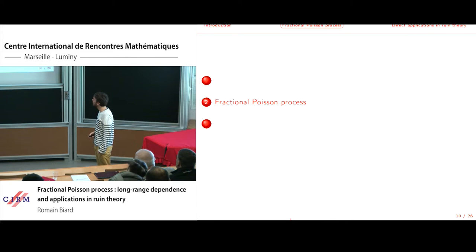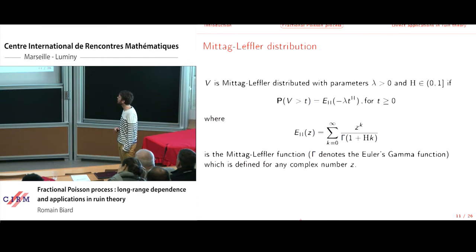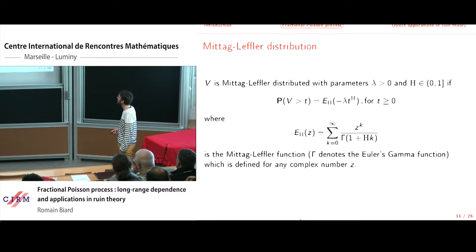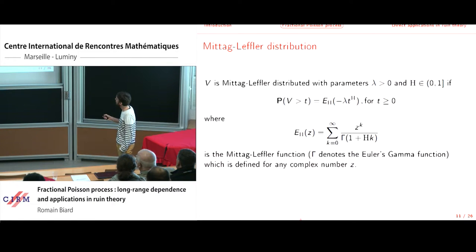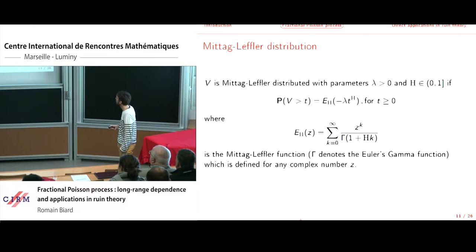Now I will speak about the fractional Poisson process. There are two different definitions, but before that I will present the Mittag-Leffler distribution. V is Mittag-Leffler distributed with parameters lambda and H in (0,1) if the probability that V is greater than T is expressed using the Mittag-Leffler function E_H(z), defined by a series involving the gamma function. We have this expression for the tail function of V, where lambda and H appear as parameters.